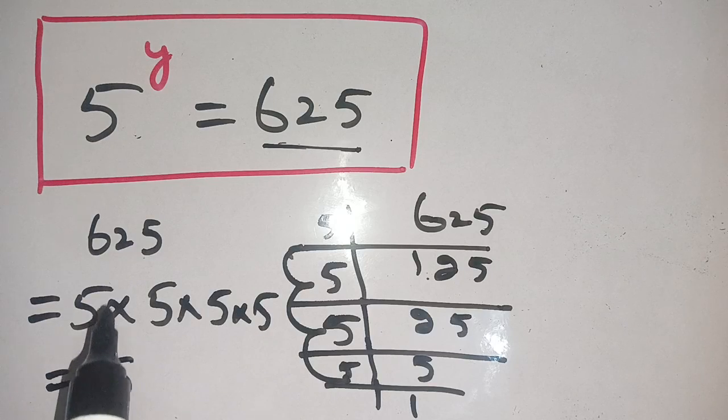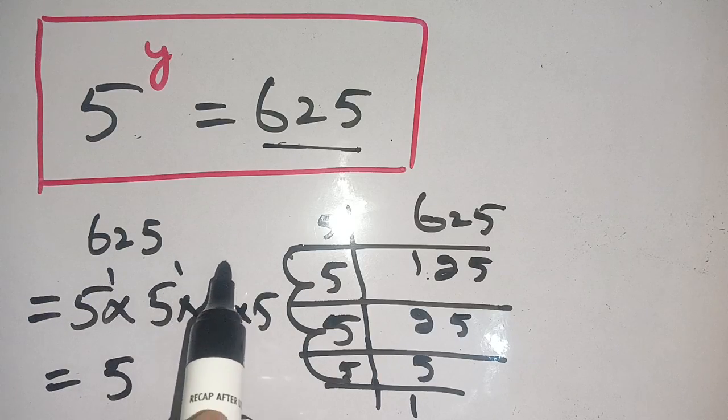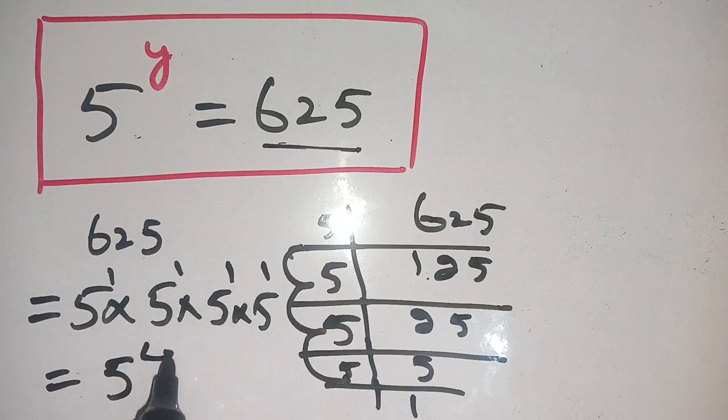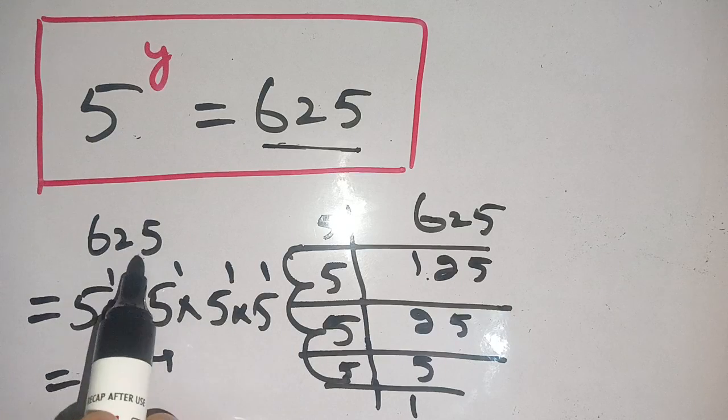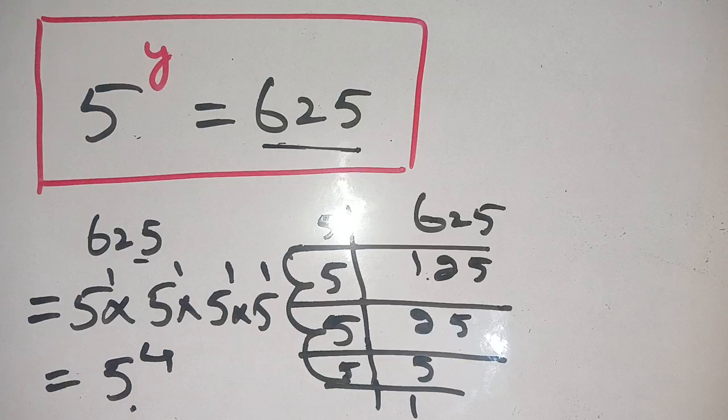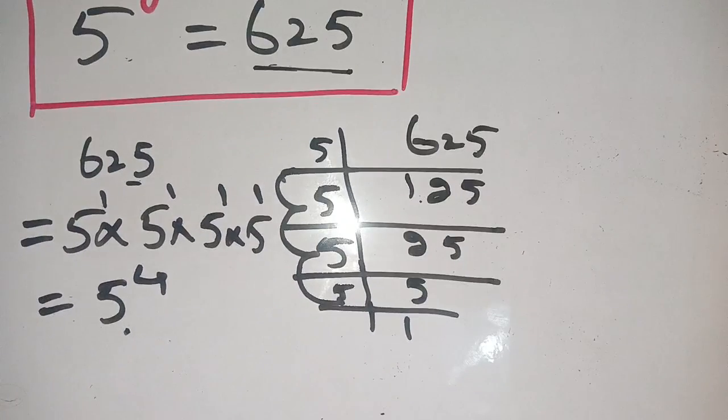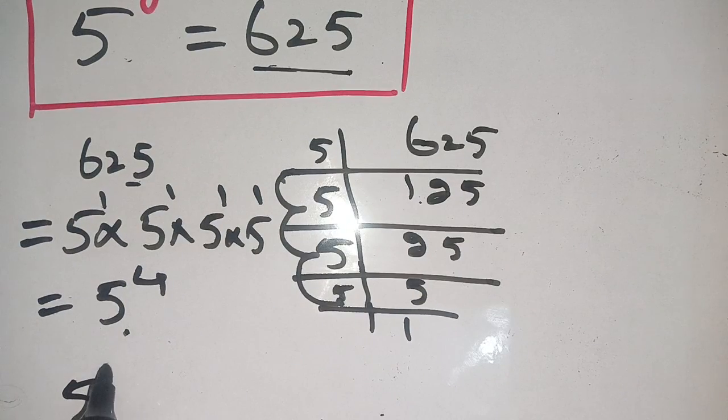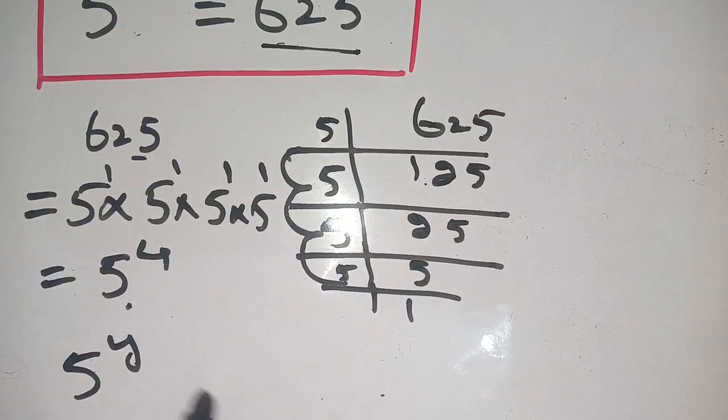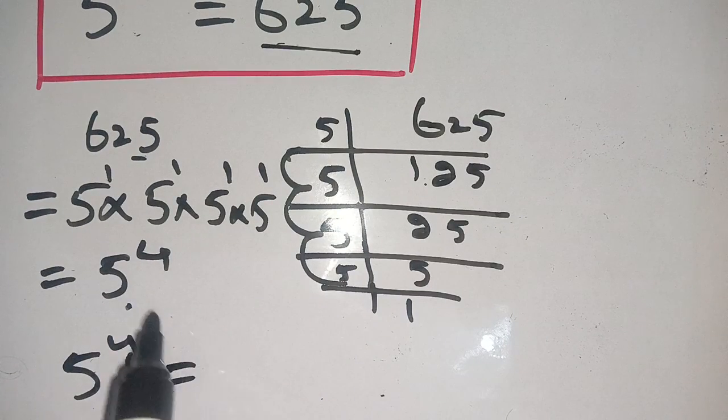It is equal to 5 to the power of 1 plus 1, 2 plus 1, 3 plus 1, 4. Thus 625 is equal to 5 to the power 4. Now we take our left-hand side: 5 to the power y equals 625.